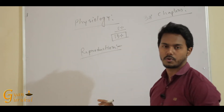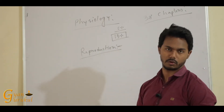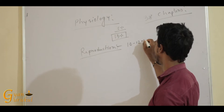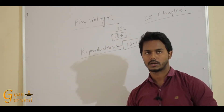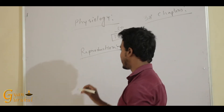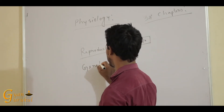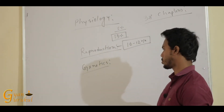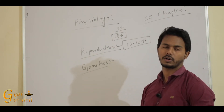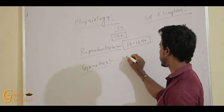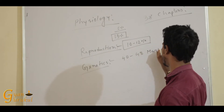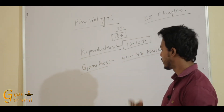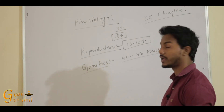Reproduction — covering human reproduction, plant reproduction, and microbes reproduction — accounts for another 10 to 12 percent of marks. It is a fixed rate every year, a definite value. After that is genetics, which is one of the heavy portions. Genetics contributes 40 to 48 marks every year. Genetics has three chapters.